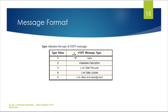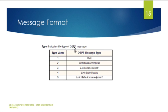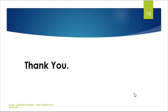The type field in the OSPF message format indicates the type of OSPF message. There are five message types: type 1 is Hello, type 2 is Database Description, type 3 is Link State Request, type 4 is Link State Update, and type 5 is Link State Acknowledgement. This covers OSPF including the packet format, message types, autonomous systems, and inter-AS communication.